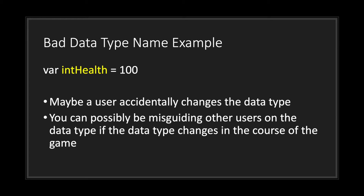In this example, we have a variable int_health assigned the literal integer value 100. A user could accidentally change the data type, or you could be misguided about the data type if it changes over the course of the game. For instance, even though you have the variable int_health, what if in the future they decide to swap the integer for a string?